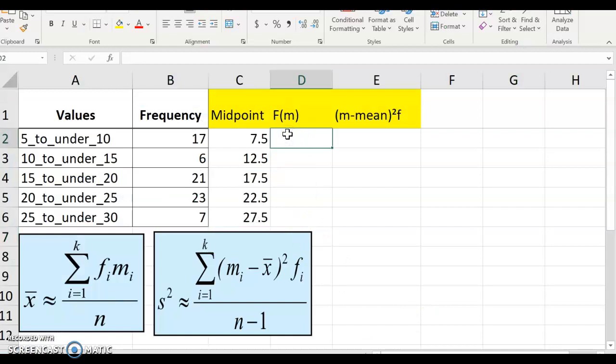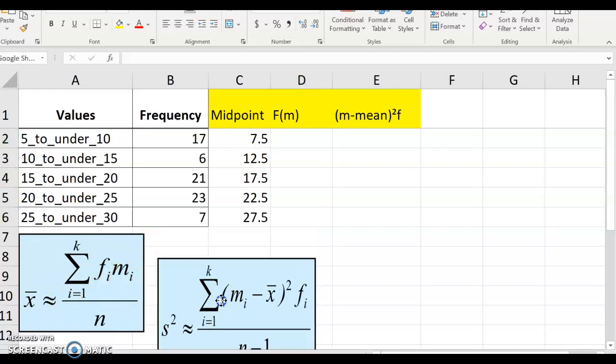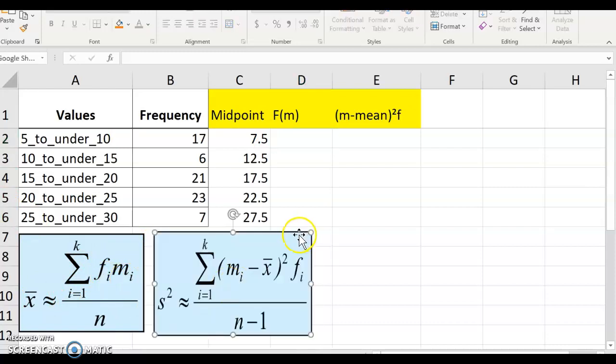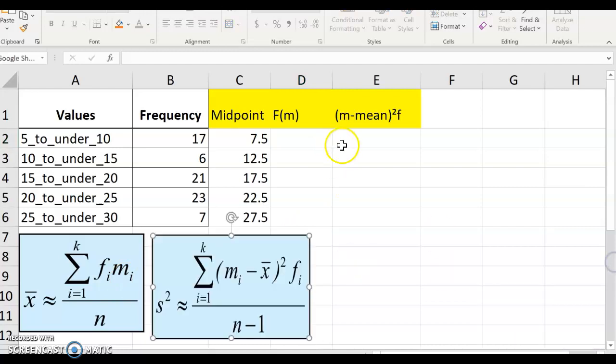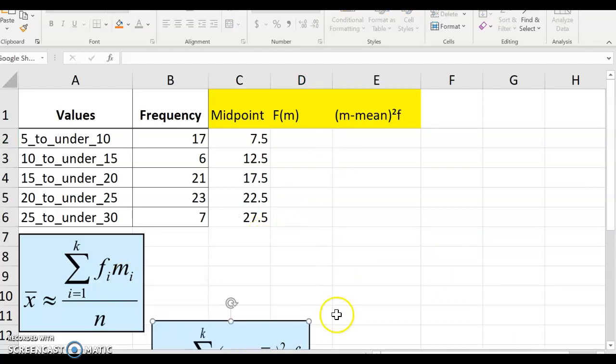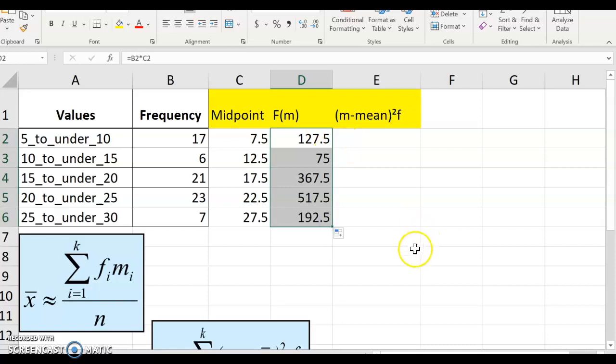The next thing we want to do to find the mean is multiply the frequency times the midpoint. Let me move this out of the way for a second. So your frequency is 17, and then times it by your midpoint, which is 7.5. So I just highlighted the cells I wanted to multiply. And what you can do is you can copy this formula down.